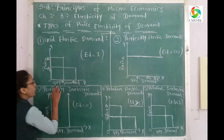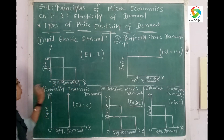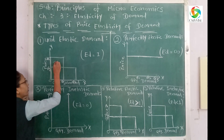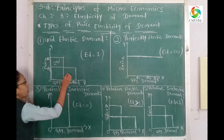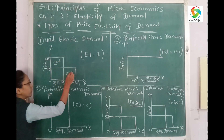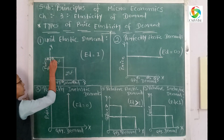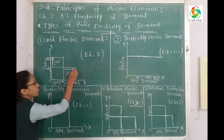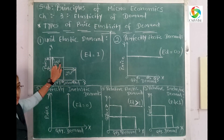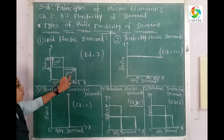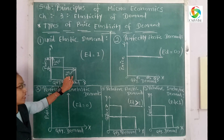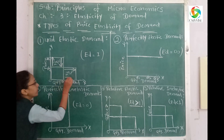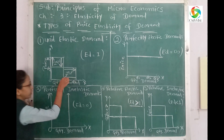On the OX axis we take quantity demanded, and on the OY axis we take price. If the price increases by 25%, the demand will also decrease by 25%. If price decreases, demand increases by the same proportion. That equal proportionate change is called unit elasticity of demand.